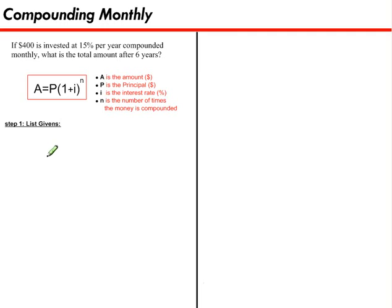The first thing I'll do is pick out our givens, or the important numbers in this problem that I'll need. The first thing I see is $400 is being invested. So that's the amount of money that we start with. In other words, that's our P, or principal. P is $400.